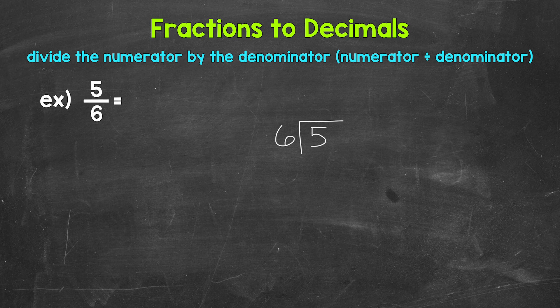Then we go through the division process. So we have five divided by six. How many whole groups of six are in five? Well, we can't do that, so we need to use a decimal and a zero in order to work through this.